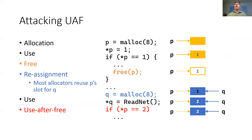On this slide, we can see how an attacker can make use of a UAF bug. An additional call to malloc has been added to the previous code fragment as well as a read from a network connection. Because pointers P and Q have the same size, most allocators will reassign the slot freed by P to Q. Because Q points to attacker-controllable data, P does as well. Therefore, if the final if statement guards a security-sensitive section of code, the attacker is able to enter or avoid it as necessary.